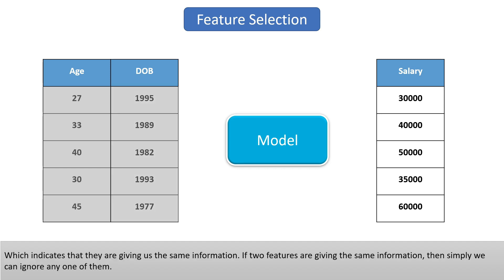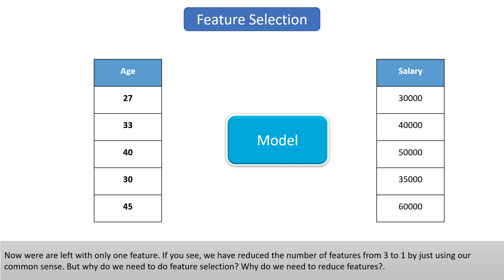This indicates that they're giving us the same information. If two features are giving the same information, we can simply ignore one of them. Now we're left with only one feature.